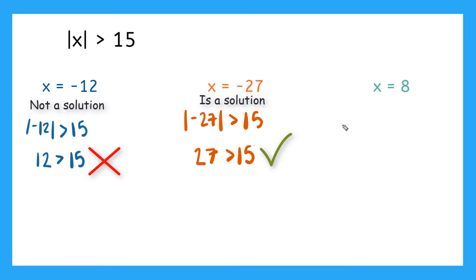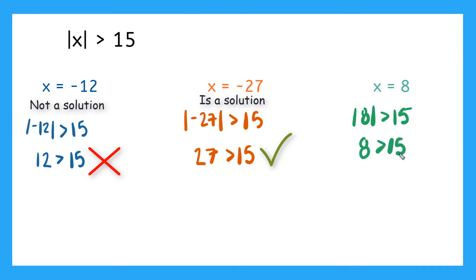How about this last one? It's our first possible solution with a positive number as x. So let's plug it in. If we have the absolute value of 8, is that greater than 15? The absolute value of 8 is just 8 — is 8 greater than 15? It definitely isn't, so 8 is not a solution to our inequality.